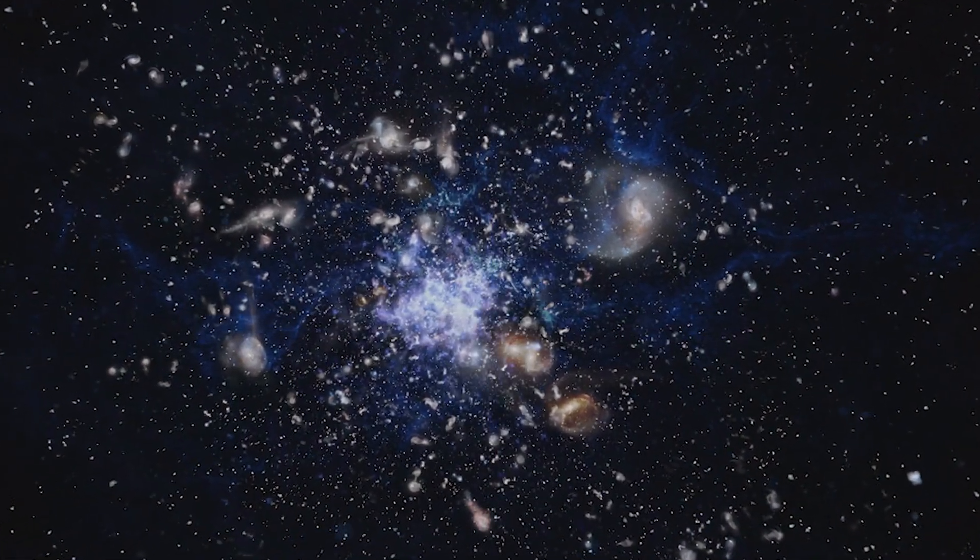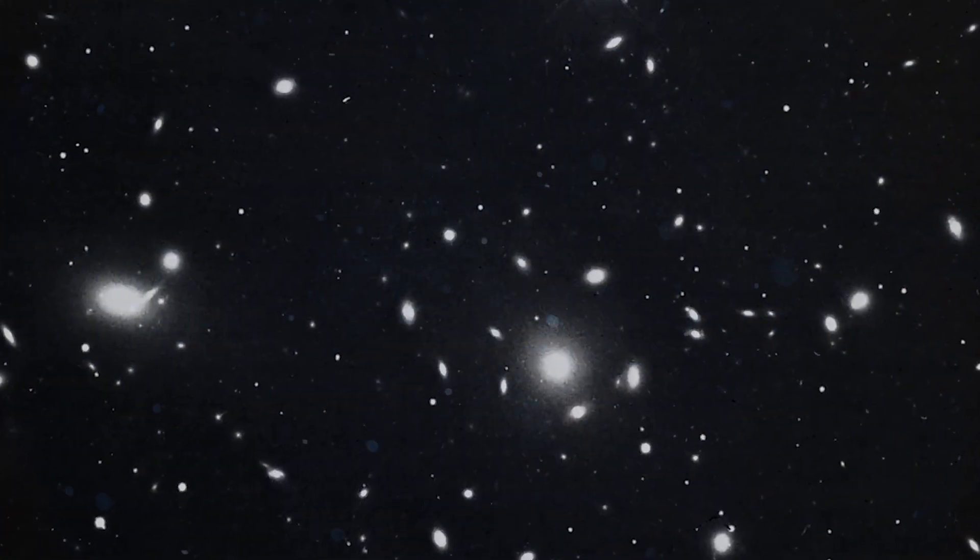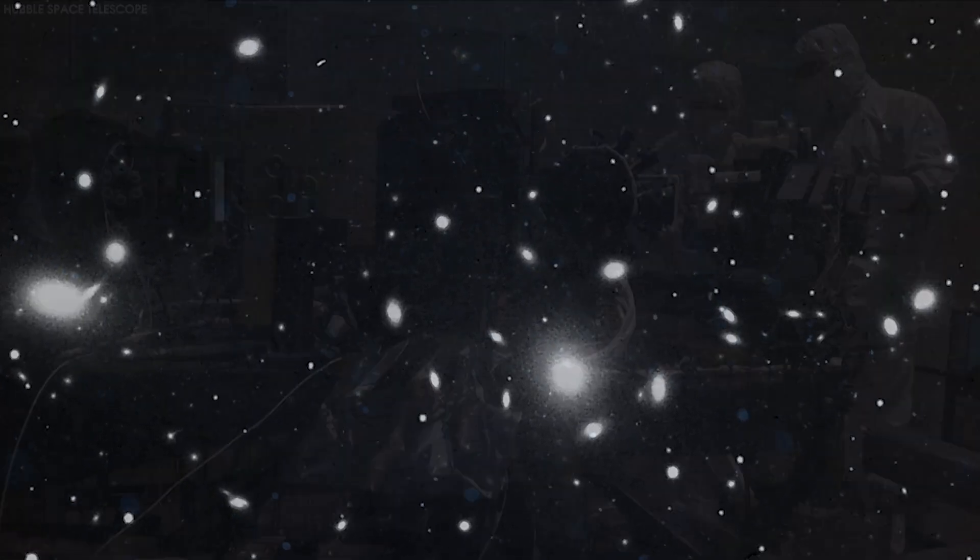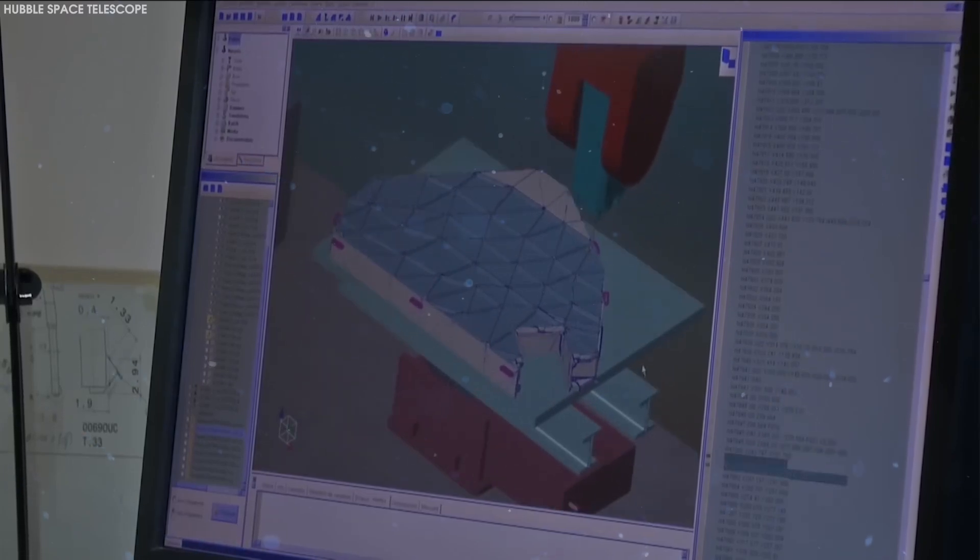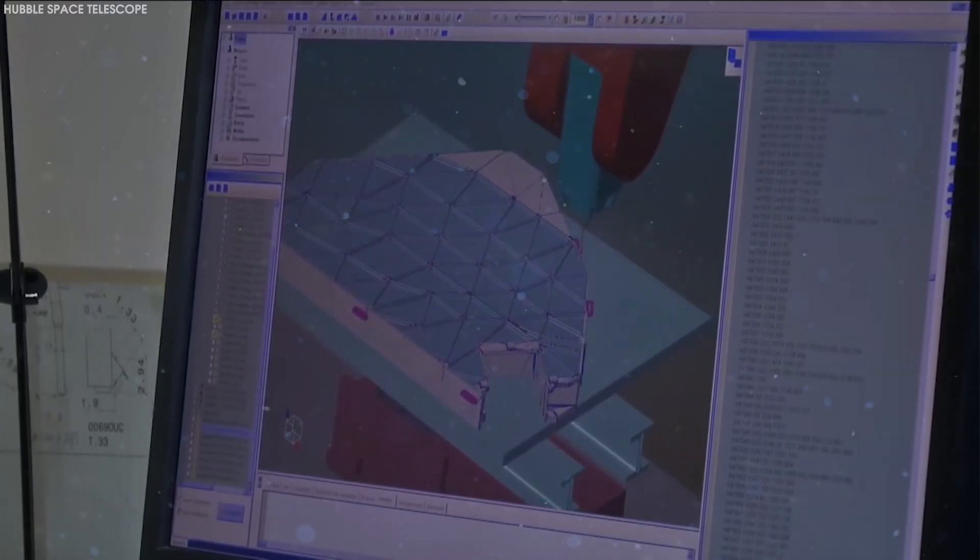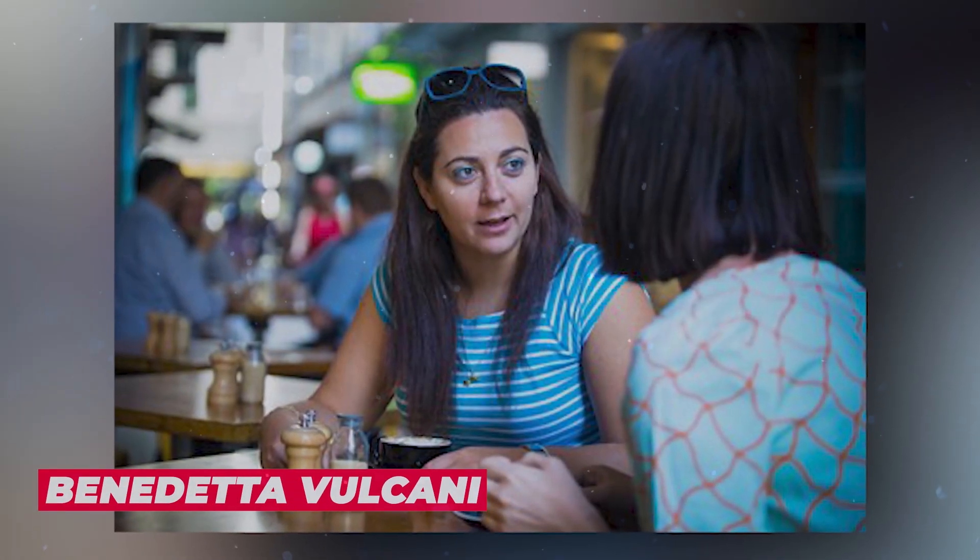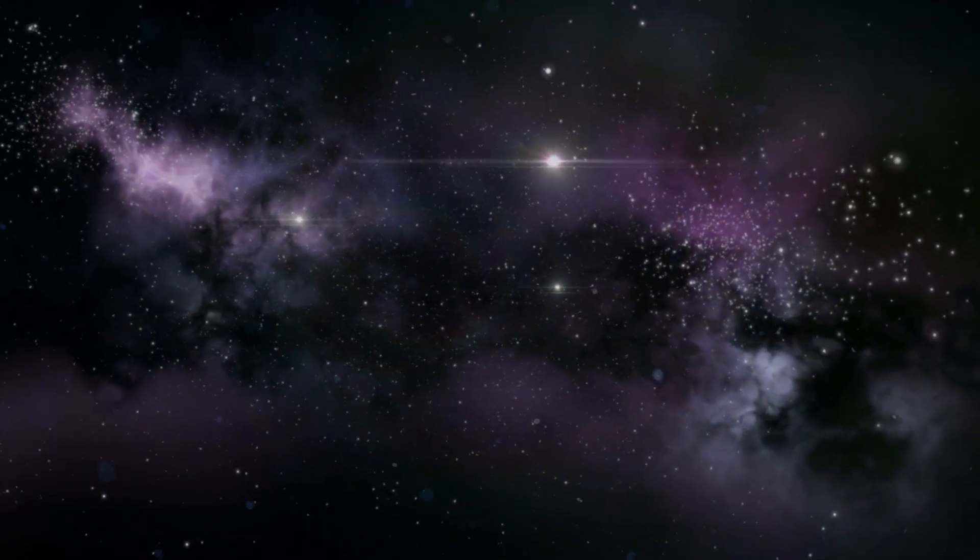The prediction suggests that this proto-cluster could eventually evolve into something similar to the Coma cluster, one of the densest known collections of galaxies with thousands of members. Analogously, the researchers compared the distant galaxies to small drops of water in separate rivers that eventually merged into a mighty river. Benedetta Vulcani, another team member, expressed this analogy to illustrate the expected outcome of these galaxies.